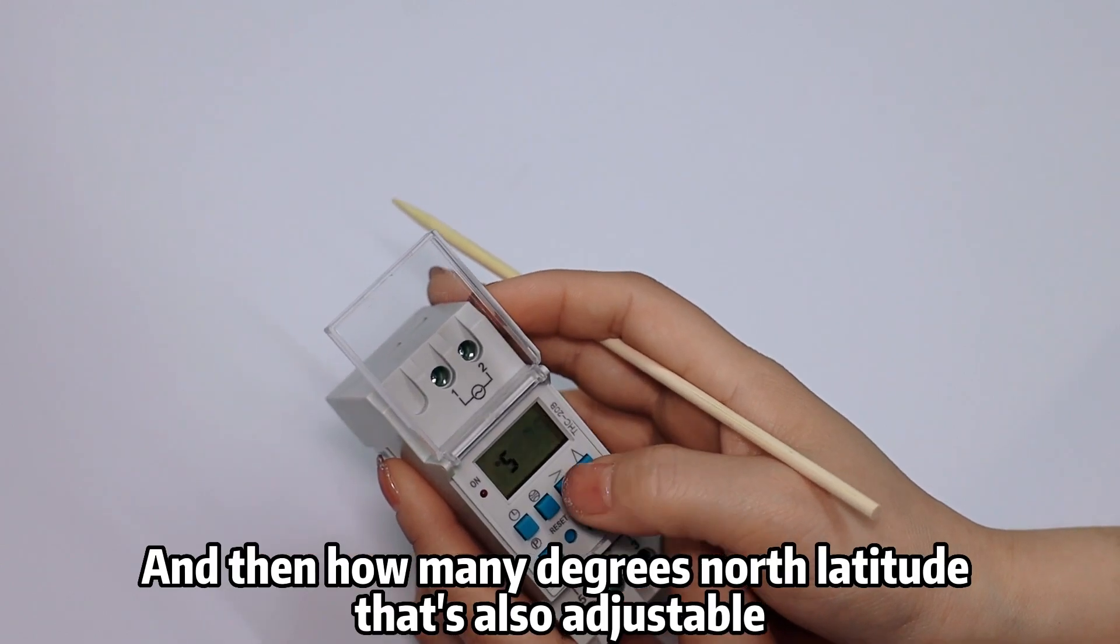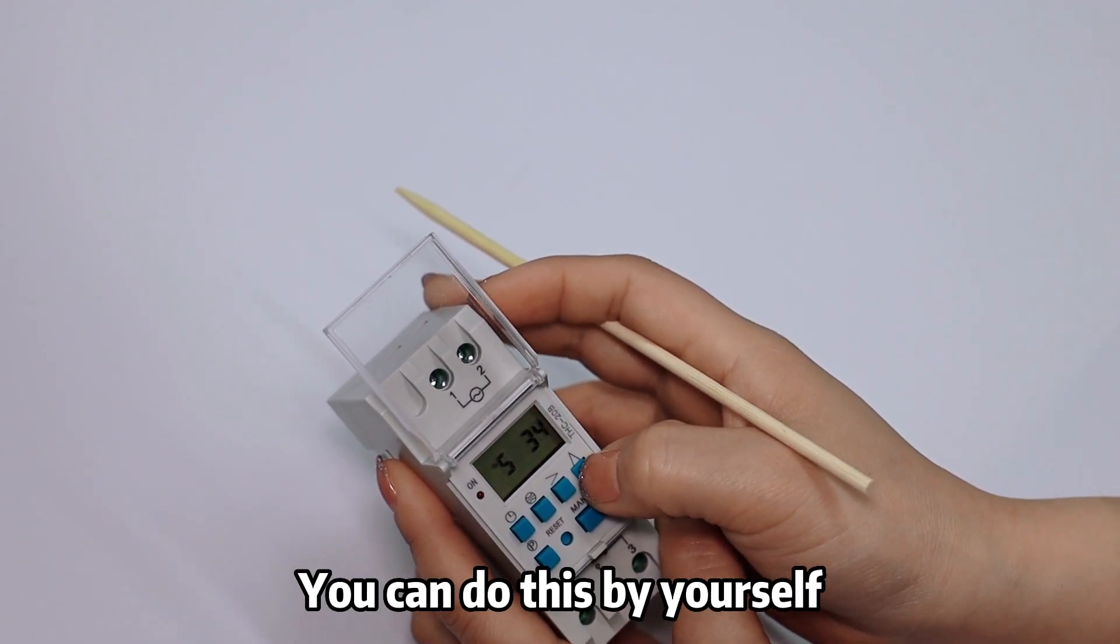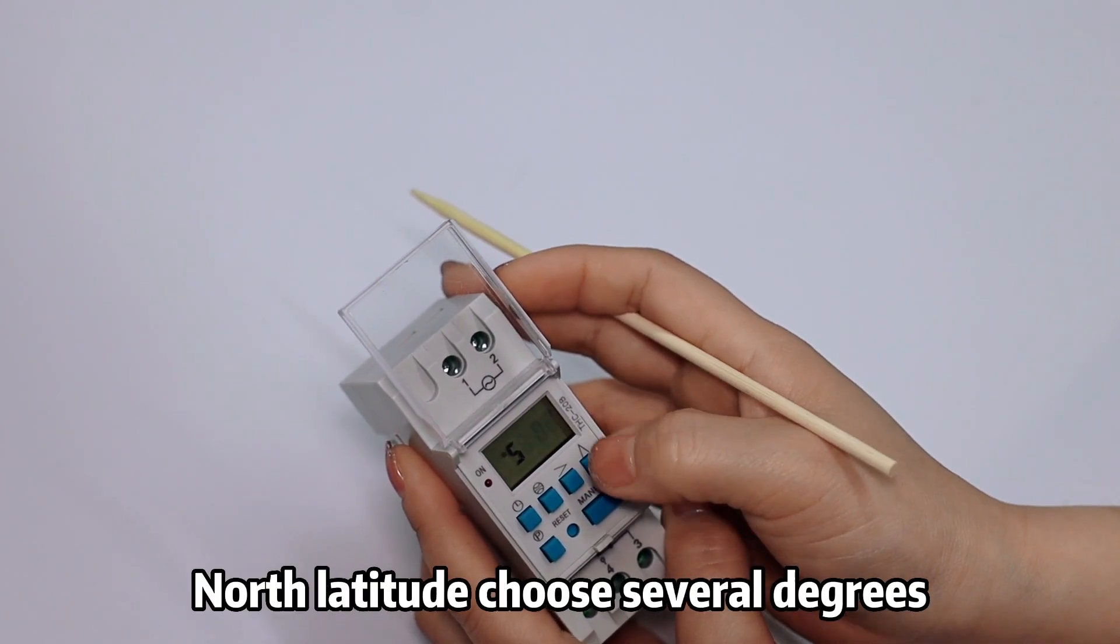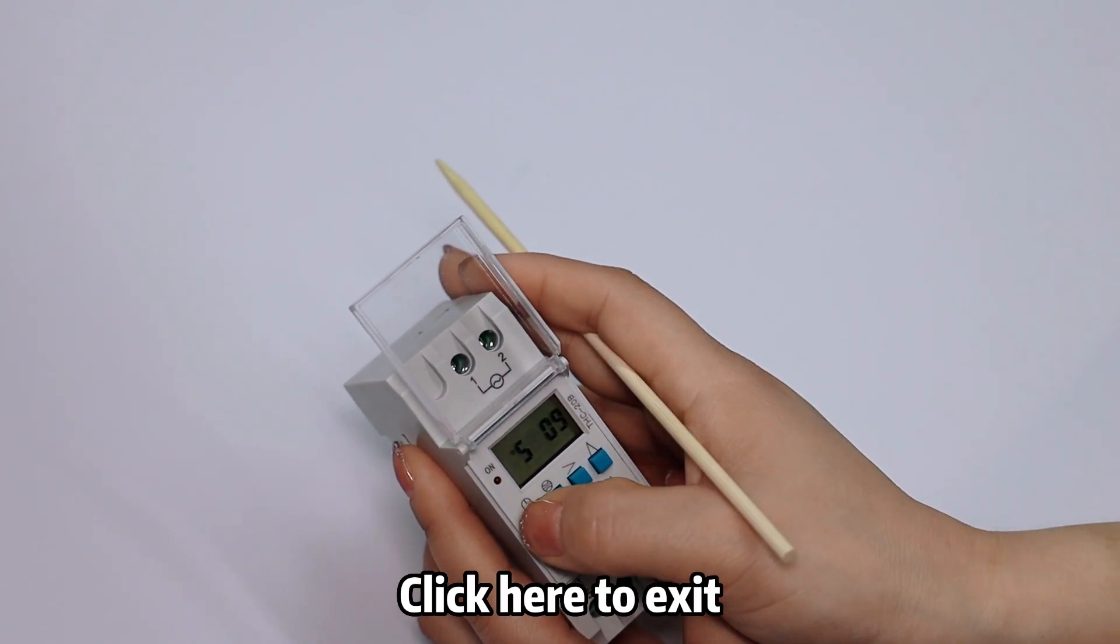Then set how many degrees north latitude - that's also adjustable. You can do this by yourself. When we get to 66, this is also optional. Choose several degrees north latitude, then click here to exit.